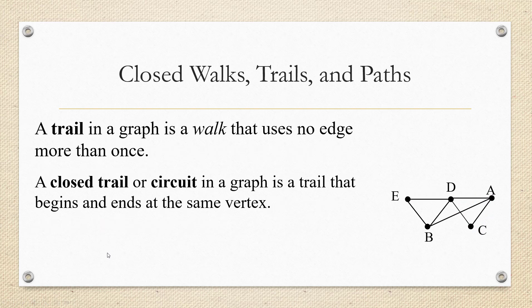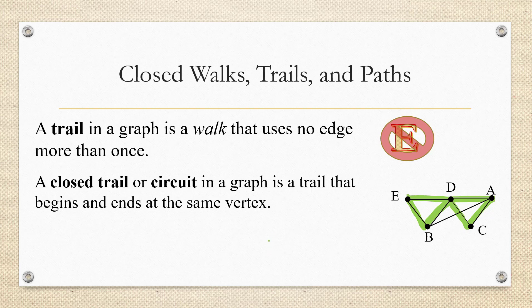A trail in a graph is a walk that uses no edge more than once, so a closed trail is navigating a graph with that same characteristic — no edge more than once. For example, we might go E to D, then to A, then to C, then to D, then to B, and end at E. We're starting and ending at the same point without covering any edge more than once. A closed trail is often referred to as a circuit, and I'll use that terminology going forward.